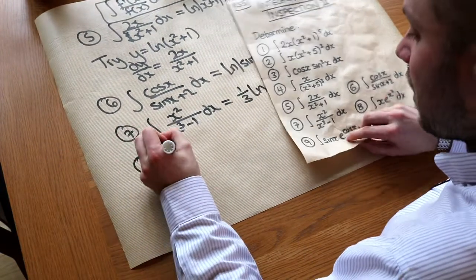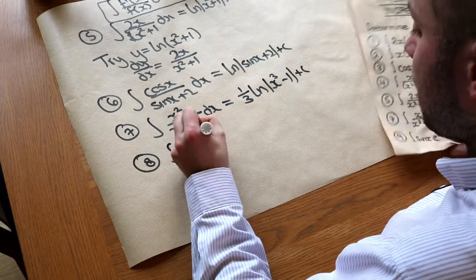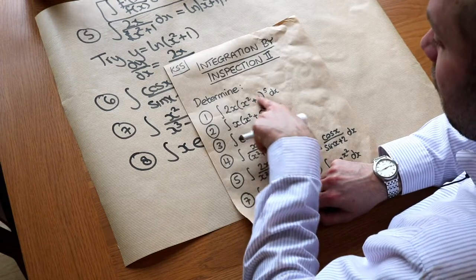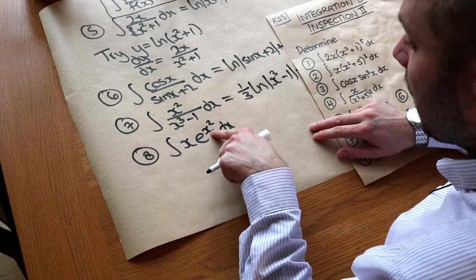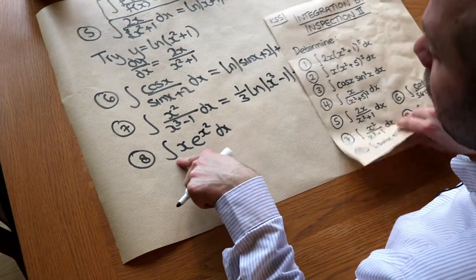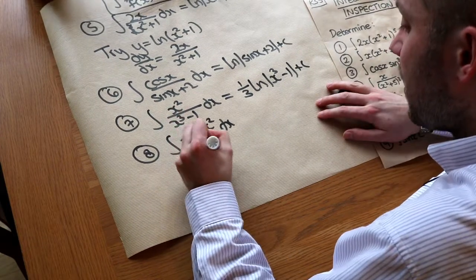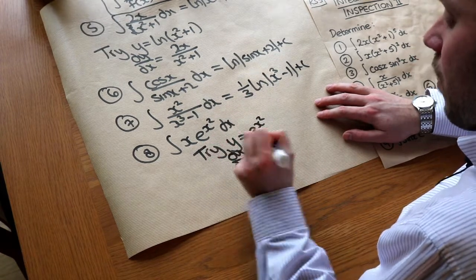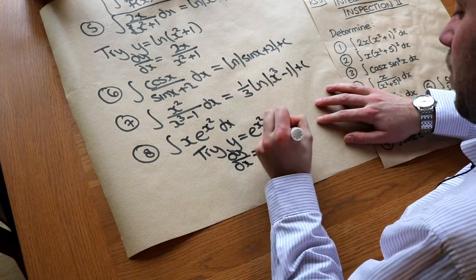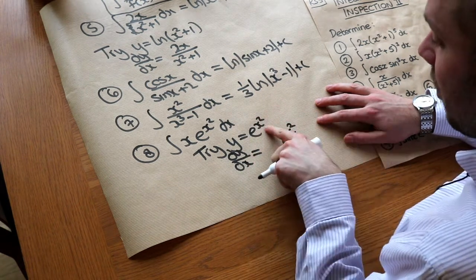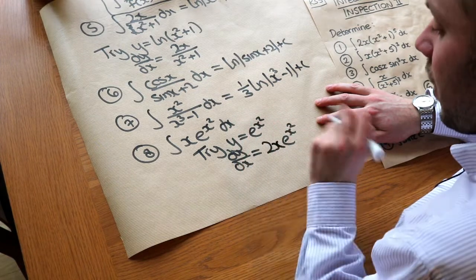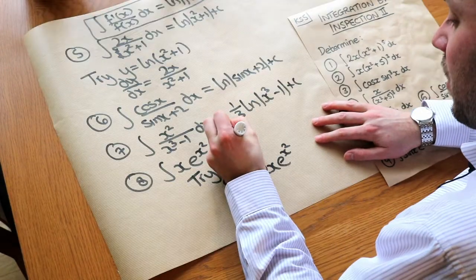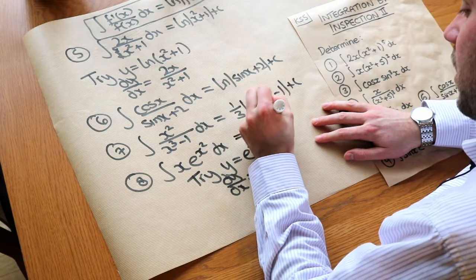Question 8: integrating x·e^(x²). This is similar to the first group — the derivative of x² is 2x, which we sort of have at the front up to a scale factor. Consider differentiating e^(x²): e to the blah stays as e to the blah, times the derivative of x², which is 2x. So that integrates to this, but we've got something half as big, giving 1/2 e^(x²) plus c.